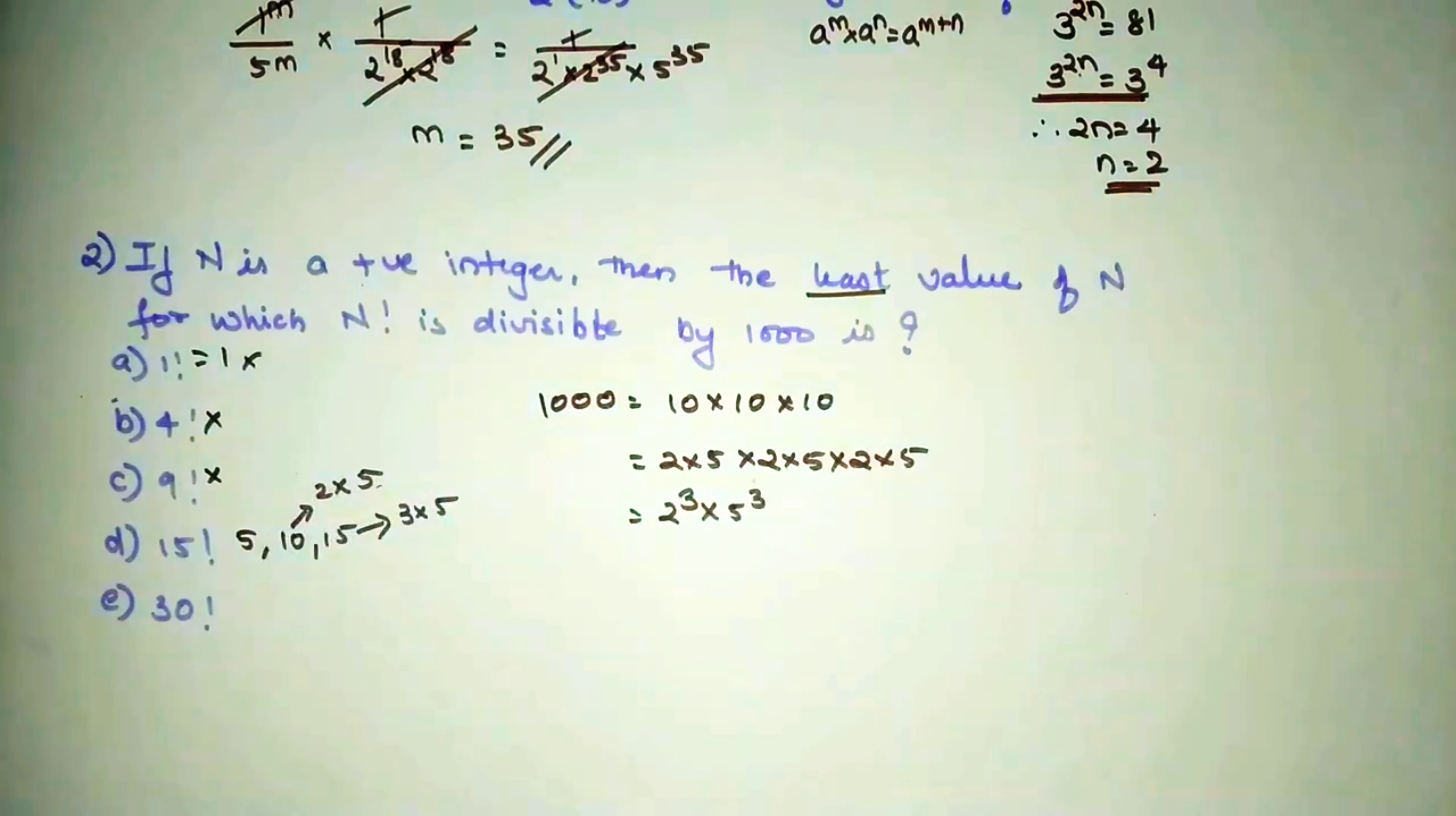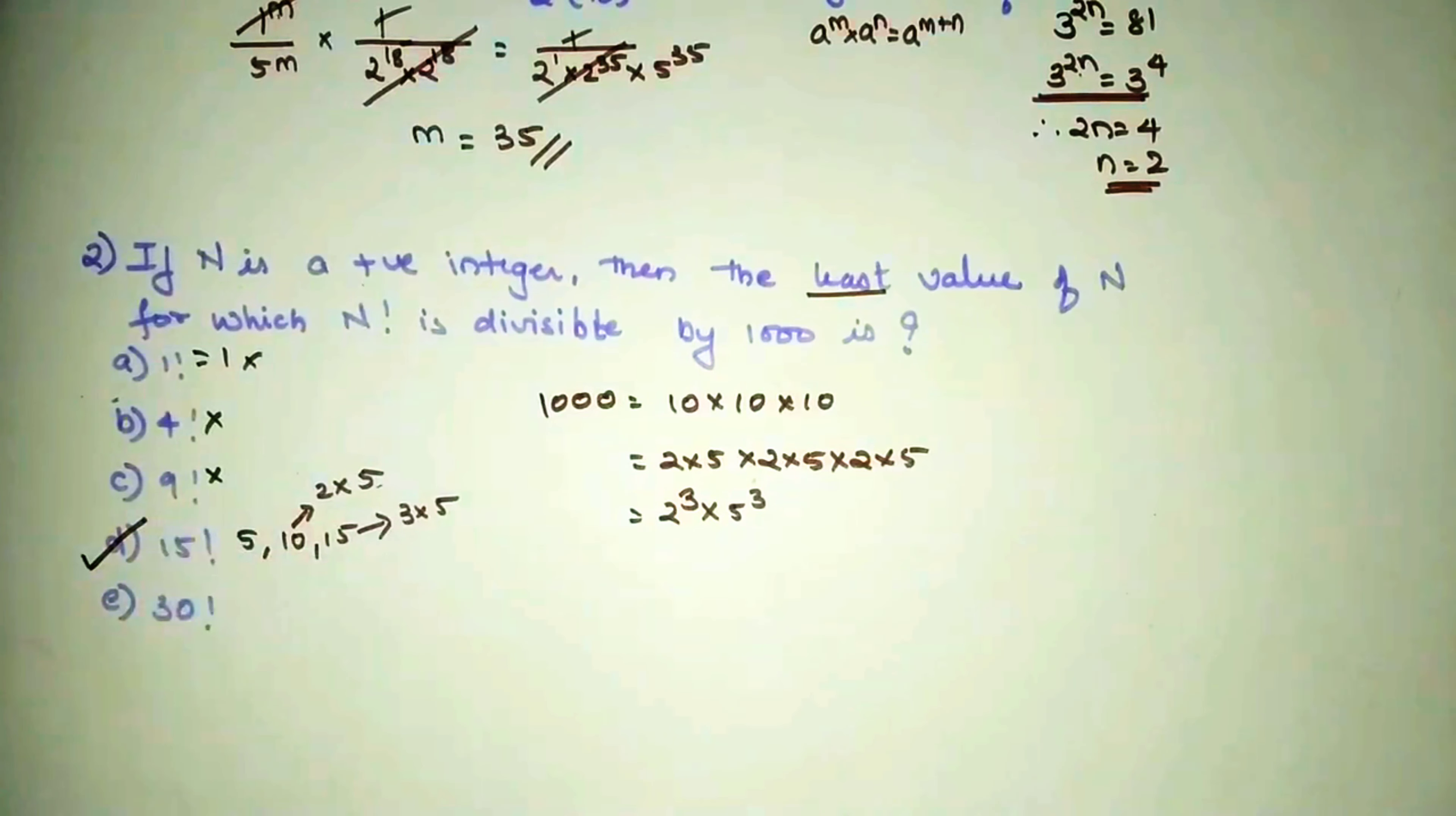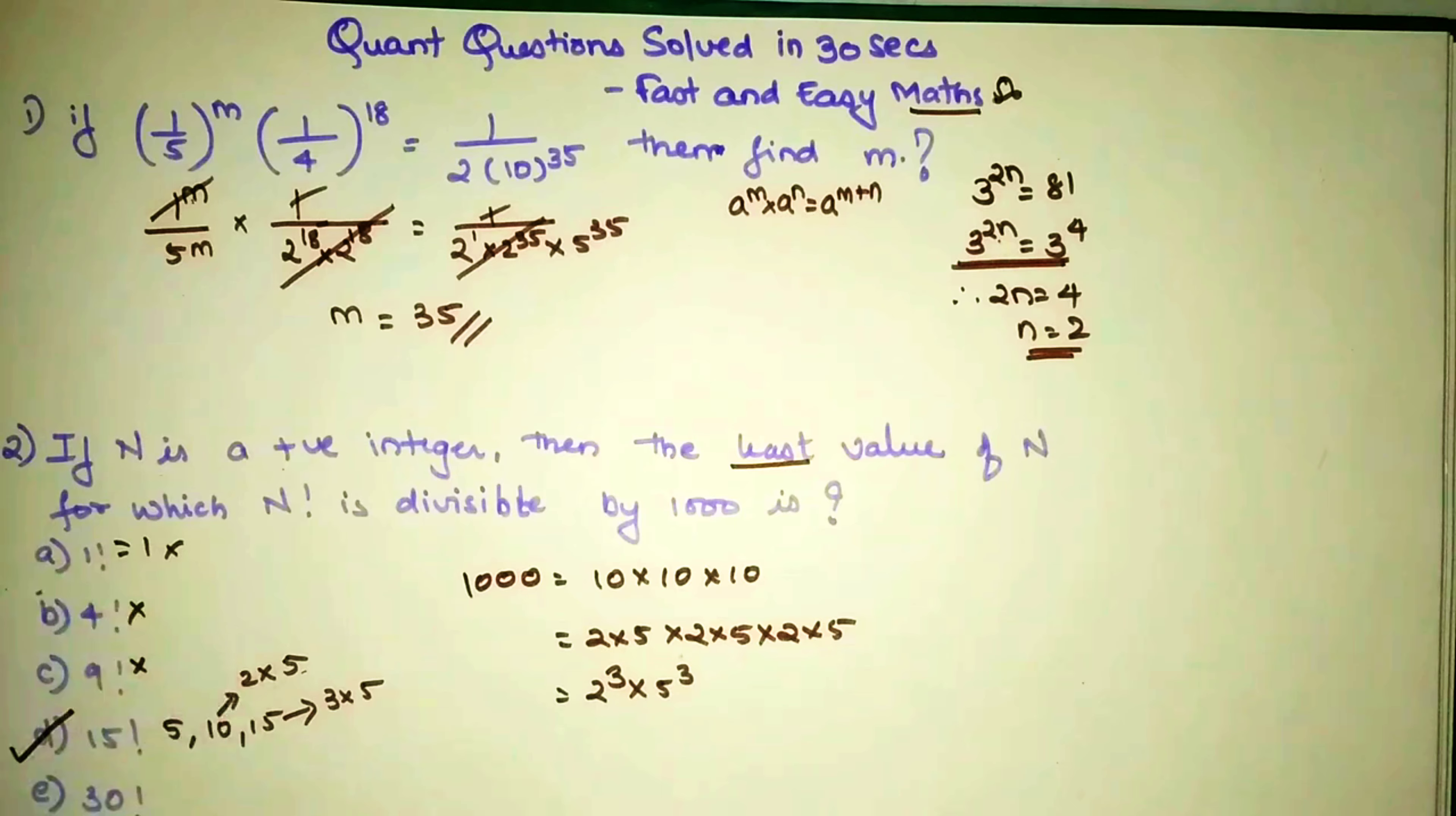So 8 always comes into 15 factorial, so that is not my concern. Only your concern was that you needed 5 happening thrice at least in the factorial. So here I can say that D is my answer.